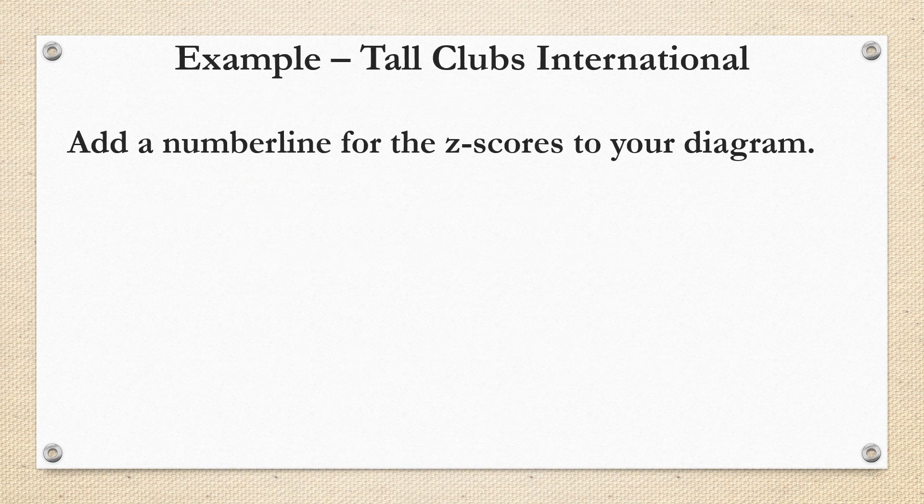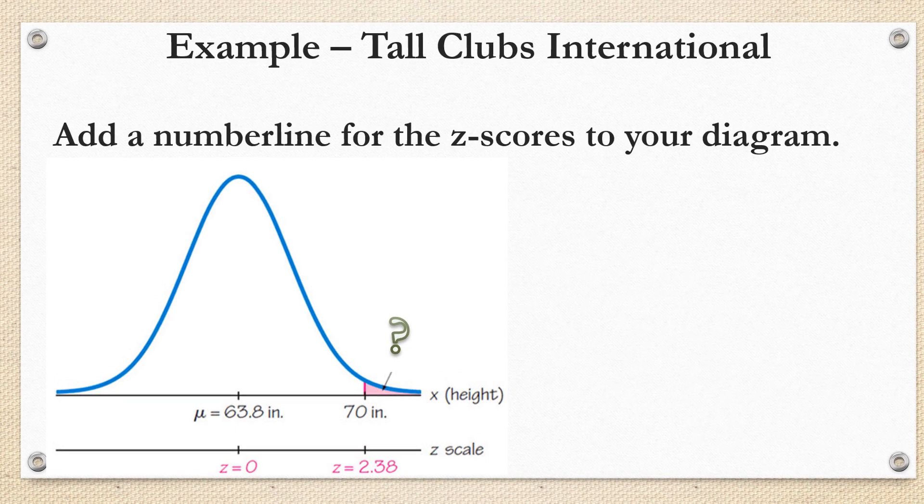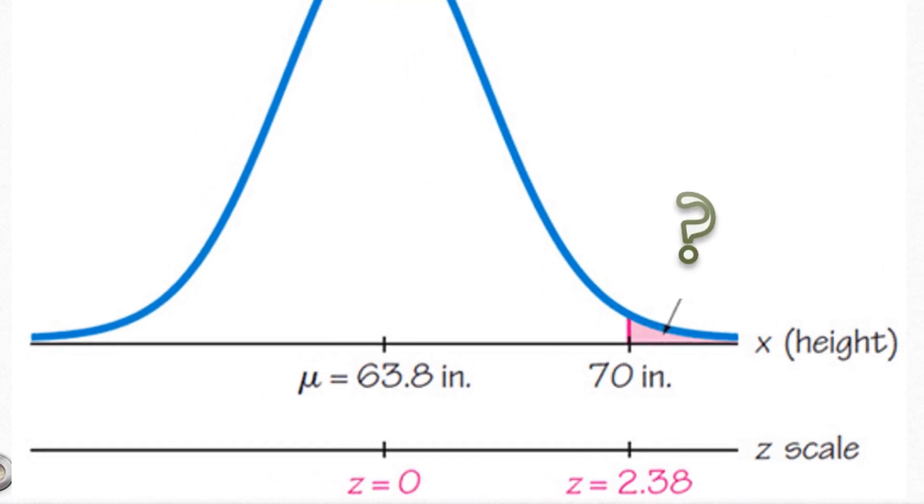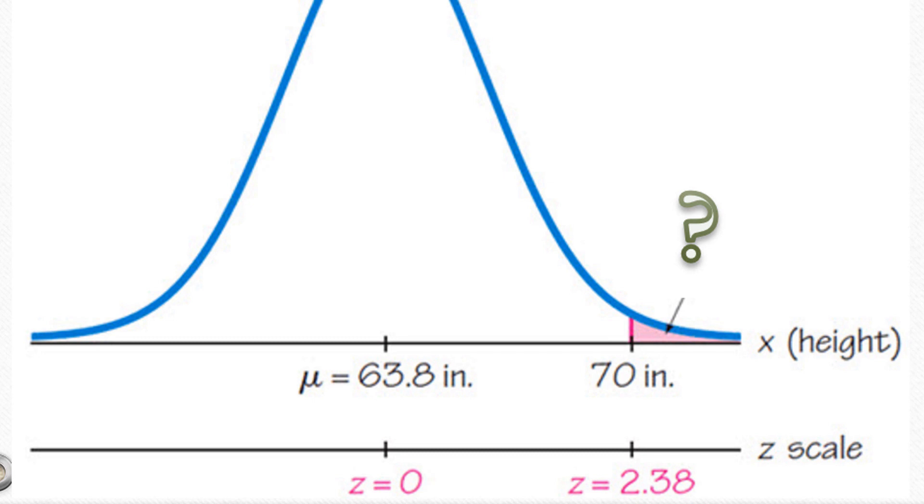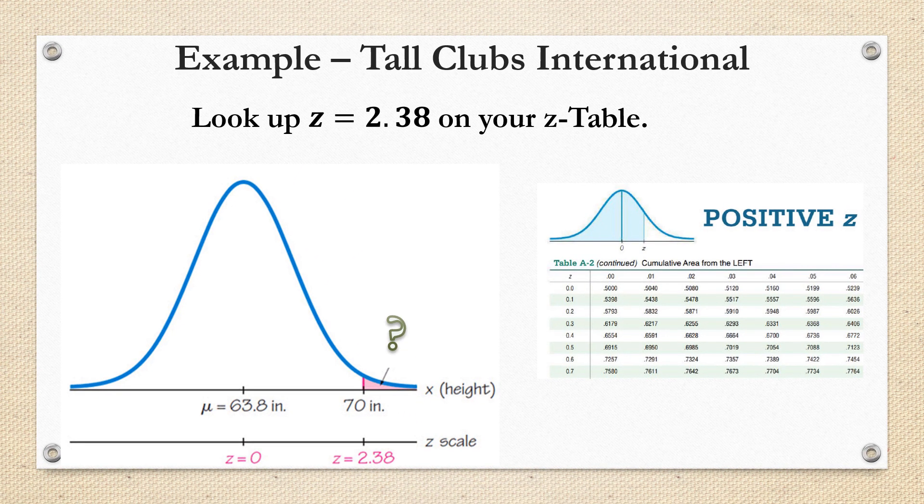All right, now we're going to go back to our problem and we're going to add to our diagram an extra number line underneath. But this one is a z-scale. It's a number line that shows the z-scores associated with the data values. So under the mean, we have a z-score of zero. And we just found that under 70, we have a z-score of 2.38. So the next thing we need to do is to look up z equals 2.38 on your z-table.